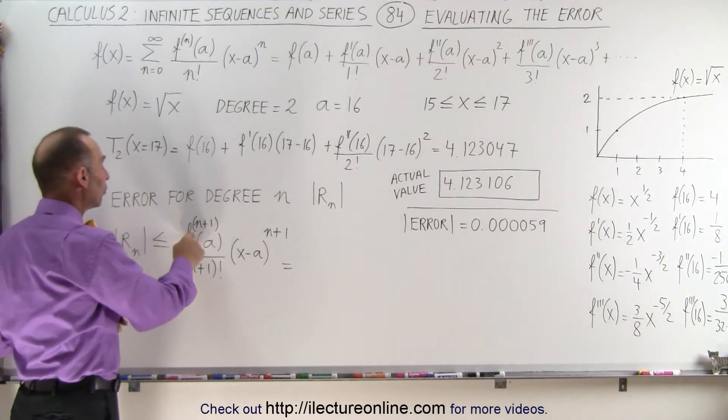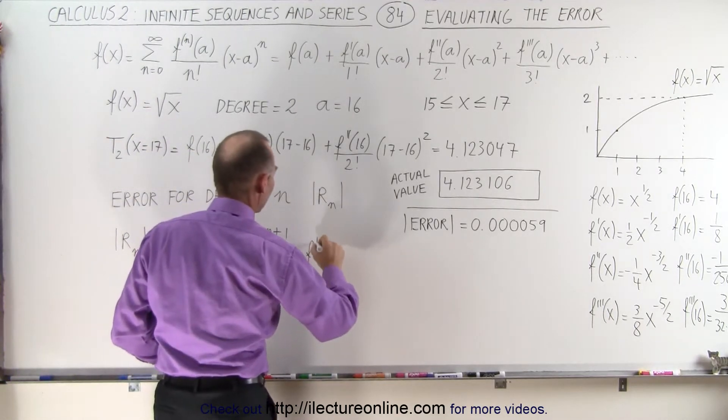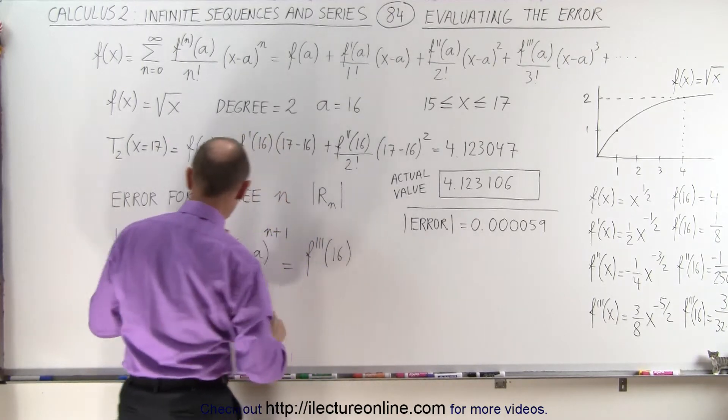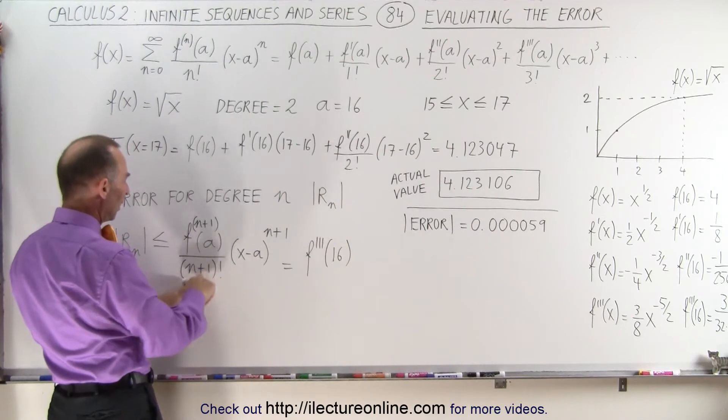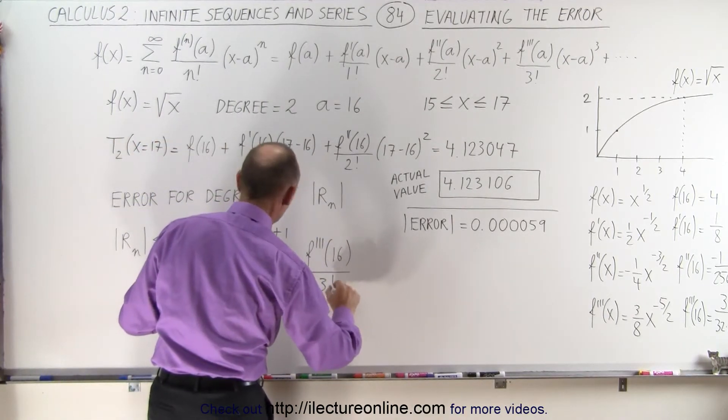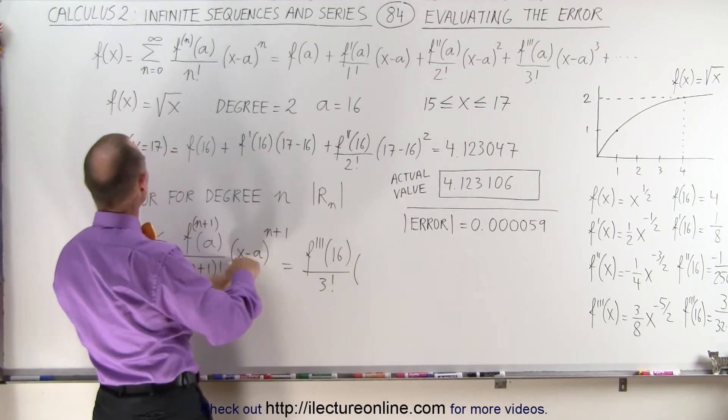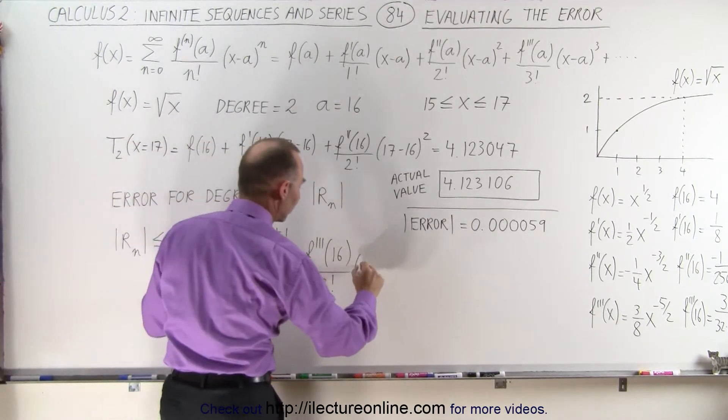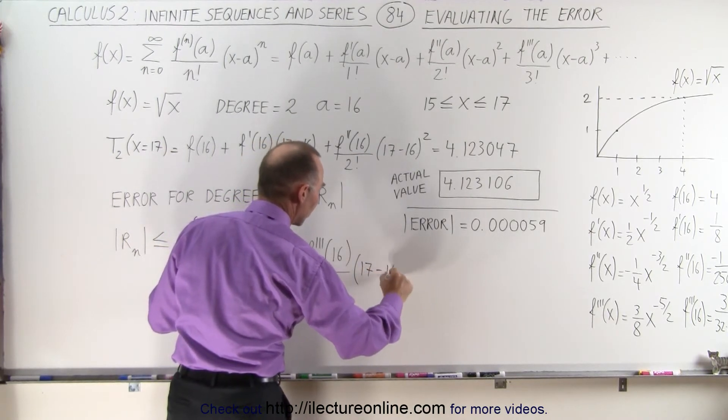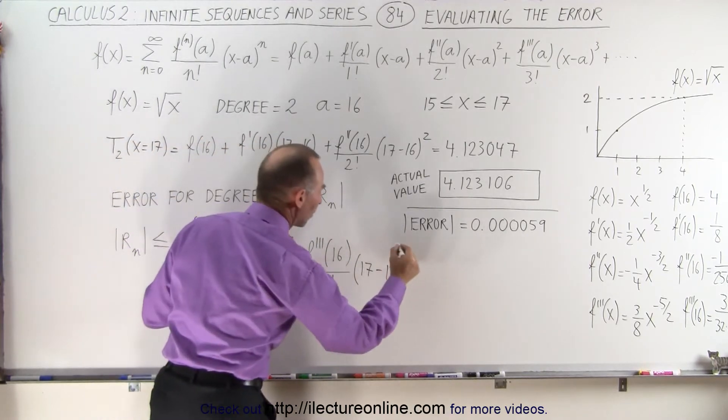So in this case, we're going to take the third derivative of a, and a, of course, is 16. So we have f, third derivative of 16, divided by n plus 1. Now, since n was 2, this will be 3 factorial, times x minus a, remember we're evaluated at x equals 17, so it'll be 17 minus 16, raised to the n plus 1 power, so that would be the third power.